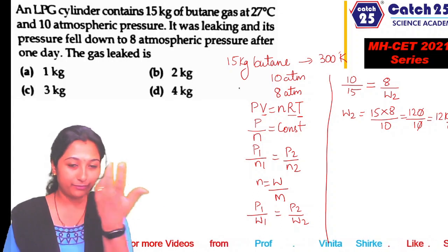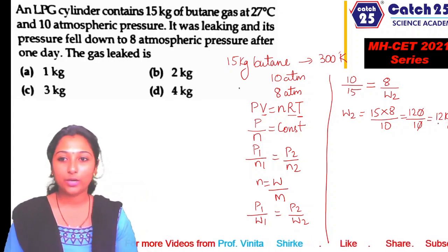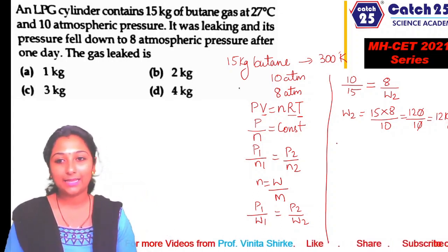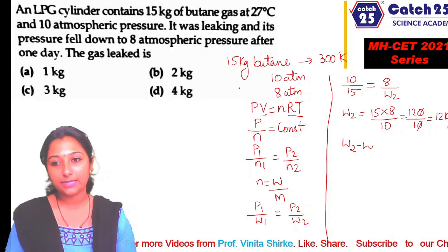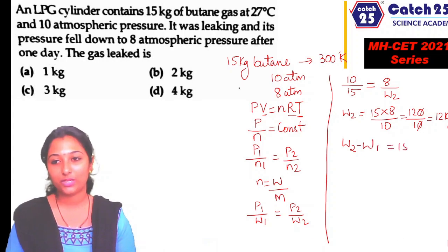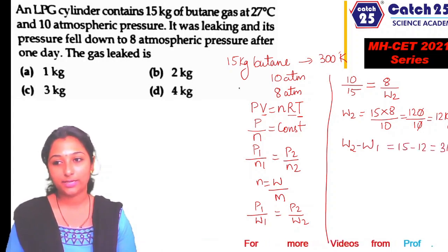Initially 15 kg was present, then it became 12 kg. So how much leaked? W1 minus W2, that is 15 minus 12, so 3 kg leaked.